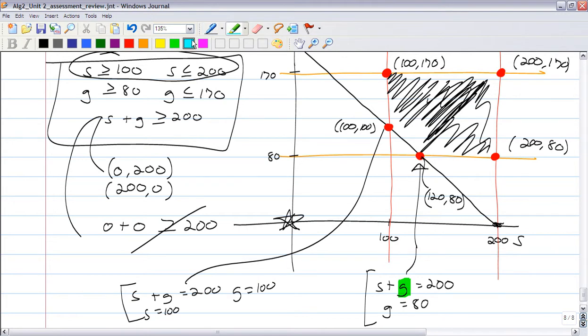This next point is the intersection of the S plus G equals 200, and then also the S equals 100. So if you combine those two and solve that system, you'd get G also equals 100. So that's the point 100, 100. So I got four test points, one, I think five, two, three, four, five.